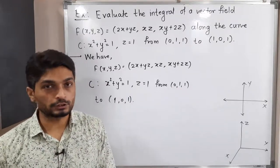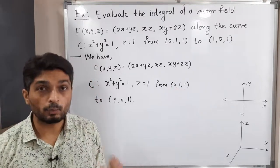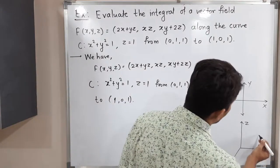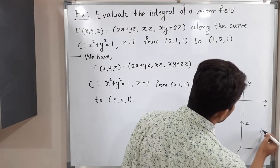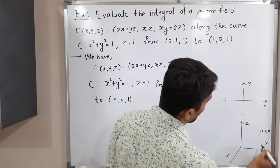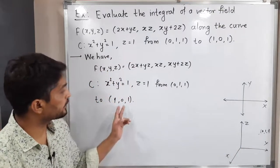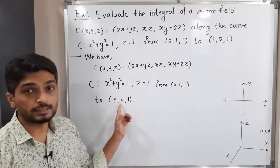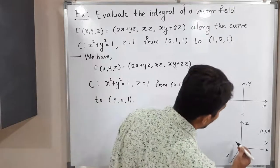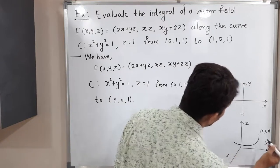Let us try to draw the curve here. The point (0,1,1) has x coordinate 0, meaning it lies on the yz-plane. So the point will be here at (0,1,1) — on y-axis 1, z-axis 1, x-axis 0. Next, (1,0,1) has y coordinate 0, meaning it lies on the xz-plane. I'm drawing a rough sketch, so yes, we have a circle like this.